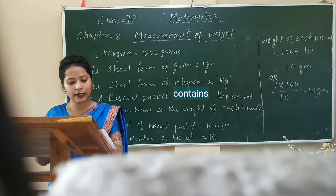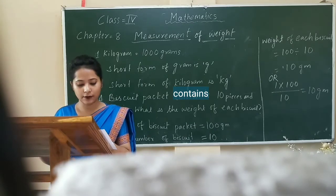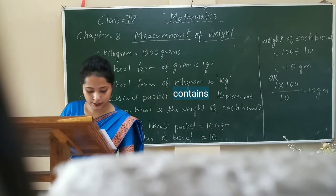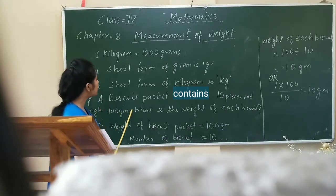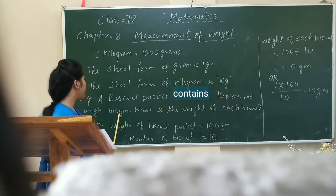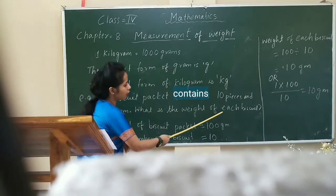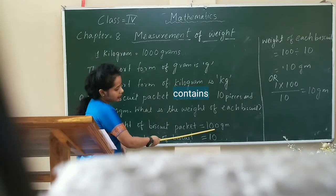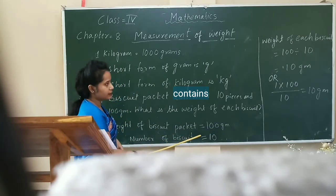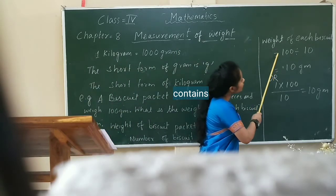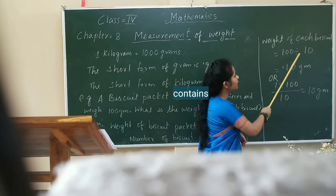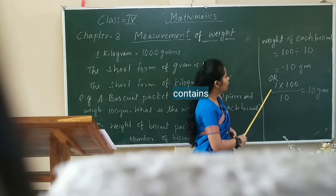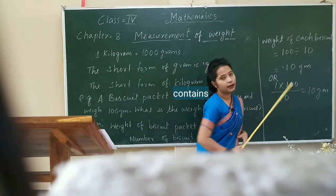As we have learned, we can add, subtract, multiply, and also divide weights. Let us see how to divide weight — division of weight by a whole number. Here is an example: a biscuit packet contains 10 pieces and weighs 100 grams. What is the weight of each biscuit? Here is the solution: weight of the biscuit packet is 100 grams, number of biscuits is 10. Weight of each biscuit equals 100 divided by 10, that is 10 grams.